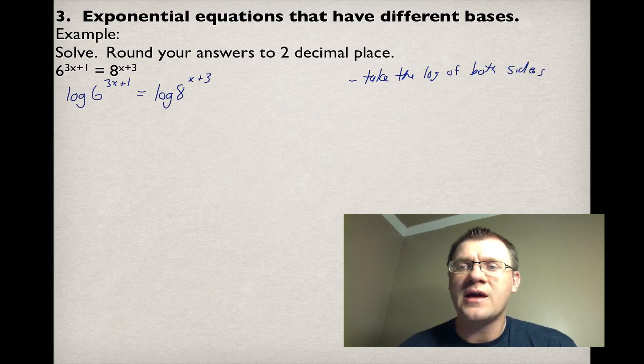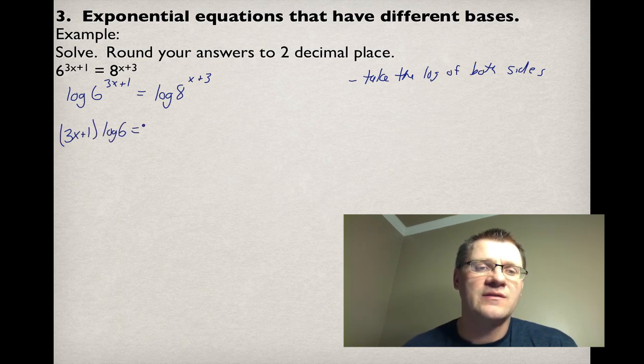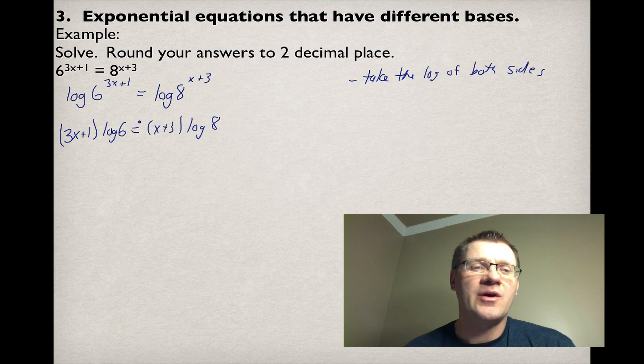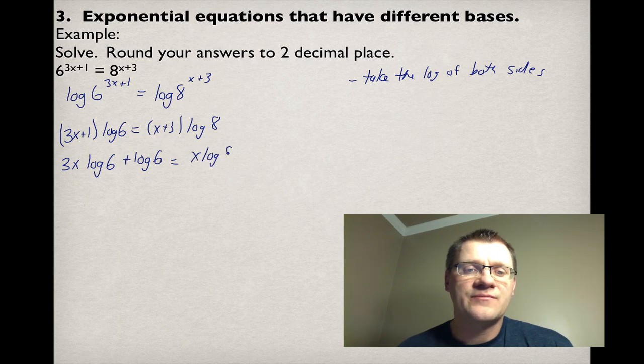If you're going to write down the steps, I'd say take the log of both sides. Then we're going to apply some of our logarithm rules. If we have something raised to a power, a log raised to a power, that's like saying that power multiplied by the log. So we can do that on both sides. Now we just have a binomial multiplied by a monomial. So we're going to expand. That's 3x·log(6) + log(6), and then we have x·log(8) + 3·log(8).